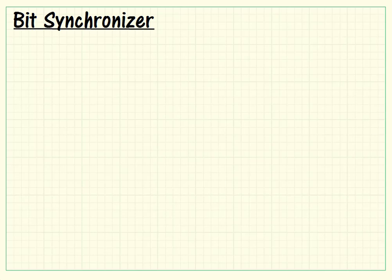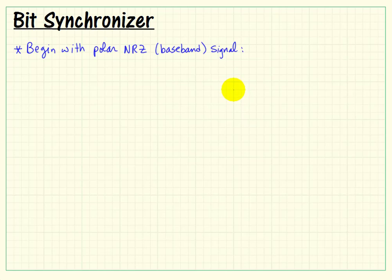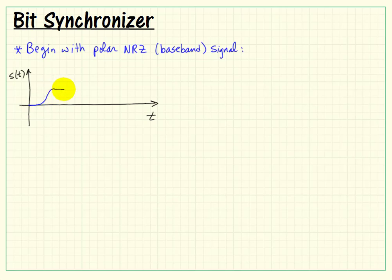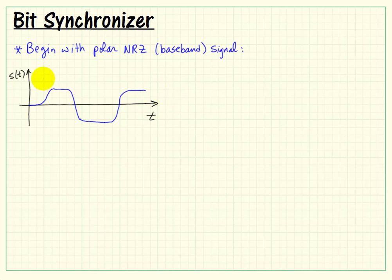Let's take a look at the BitSynchronizer, a device that allows you to start with a baseband signal of the polar NRZ, or non-return-to-zero, category, as I'm drawing here. We begin with this baseband signal and automatically extract the locations that can be used for the sampler later in the receiver process.